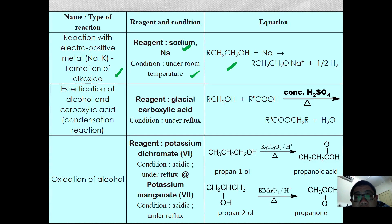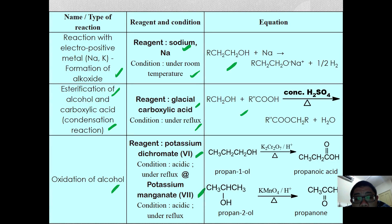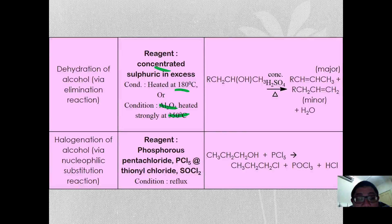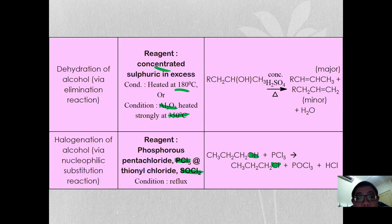From the summary table, when alcohol reacts with electropositive metals such as sodium or potassium, you form an alkoxide. Esterification occurs via a condensation reaction when alcohol reacts with a glacial carboxylic acid under reflux. Oxidation of alcohol depends on the type of oxidizing agent — either acidified potassium manganate or acidified potassium dichromate. Dehydration uses heated concentrated sulfuric acid at 180°C, or alumina heated strongly at 350°C. Lastly, halogenation converts the hydroxyl group back to a haloalkane.